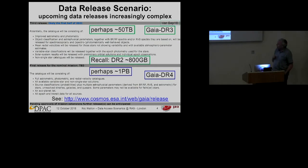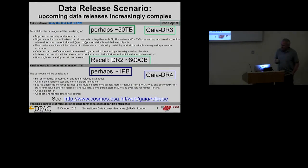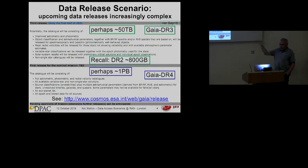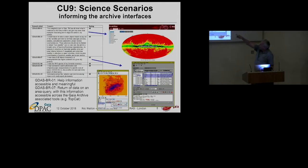The DR3 data product list is being finalized in the coming months, and more information will be provided on these pages in advance of the release. DR4 could be of the order of a petabyte, because that's when the bulk epoch photometry and spectra come out — these are the largest datasets. A petabyte in 2023–24 is still reasonably large. These are some of the usage scenarios we defined from our previous use case assessment.